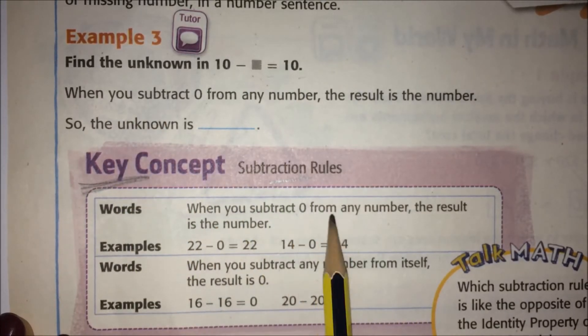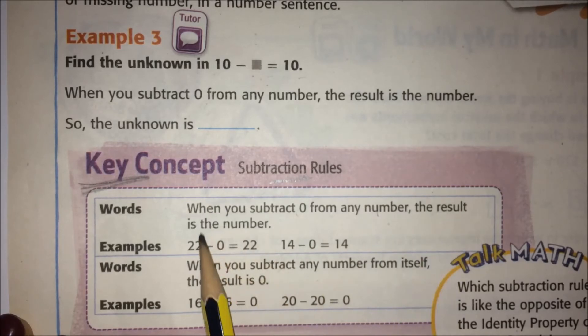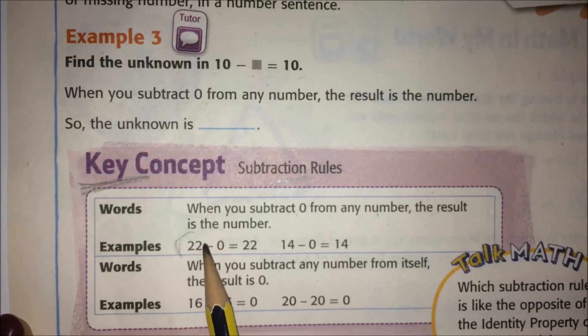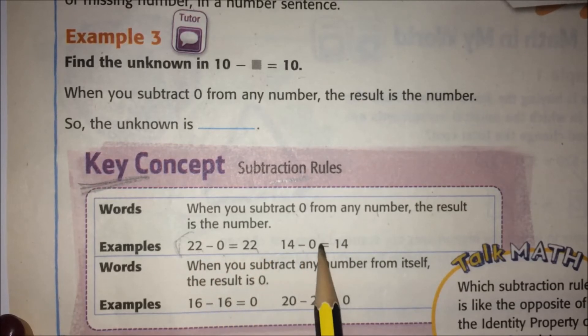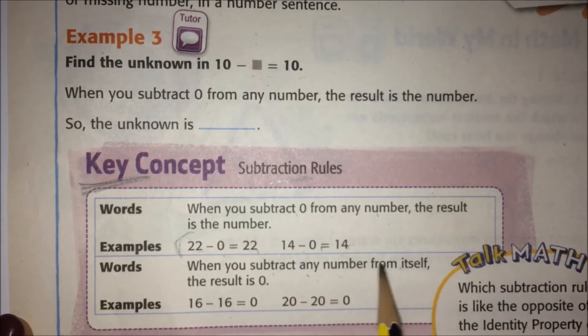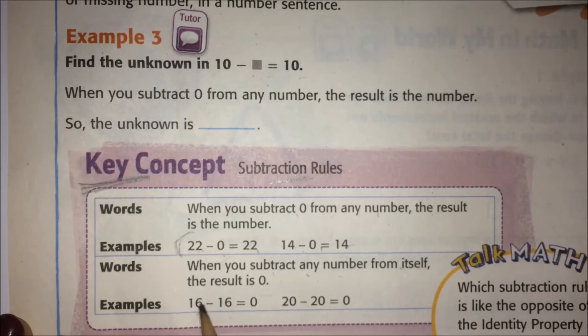When you subtract zero from any number, the result is the number. So this is kind of like the identity property, but it's for subtraction. So 22-0 is still 22. 14-0 is still 14. When you subtract any number from itself, the result is zero. So if you have 16 and you take away 16, you're left with nothing.